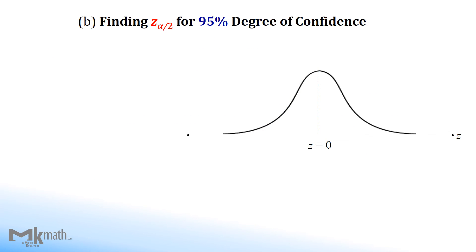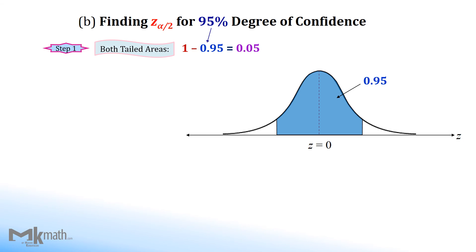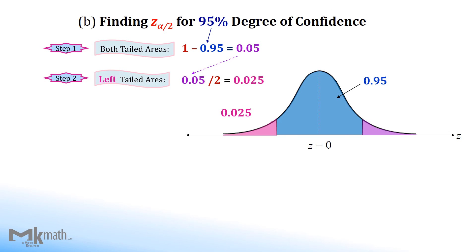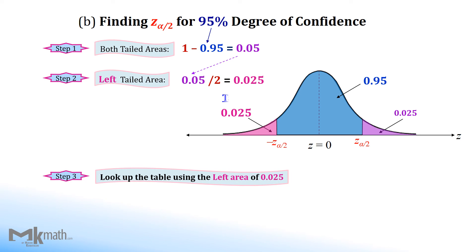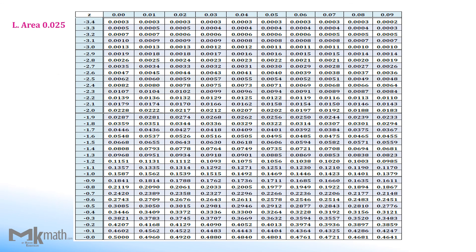Let's take a look at the next example. We shade the center area with the given confidence level 95%, or 0.95. Step 1: 1 minus confidence level 0.95 to get 0.05 as two-tailed areas. Step 2: divide the two-tailed areas by 2 to get the one-tailed area. Step 3: look up the table using the left-tailed area 0.025. We need to locate the left cumulative area 0.025, or close to 0.025, from the inside of the table.